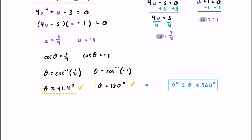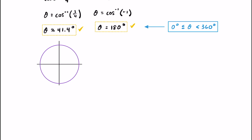We are looking for all solutions between zero and 360 degrees, so we actually have one more solution to find. When we see 41.4 degrees, we know that's in quadrant one. Drawing a reference angle with a right triangle, the ratio is three over four. Cosine is adjacent over hypotenuse, so adjacent is three and hypotenuse is four — a positive ratio of three fourths. But cosine is also positive in quadrant four, so we must have another triangle in quadrant four.